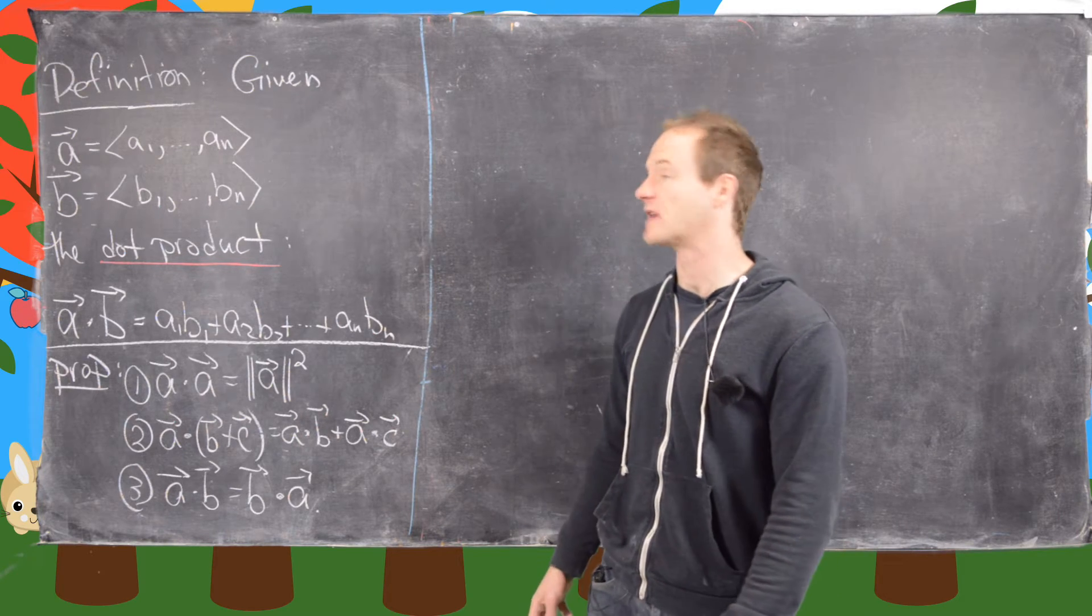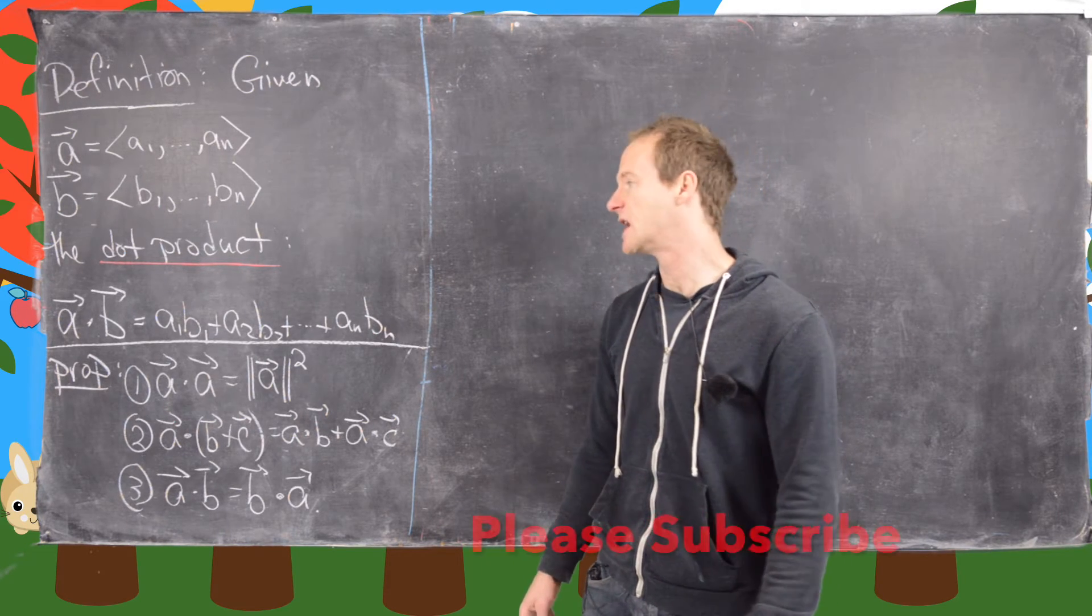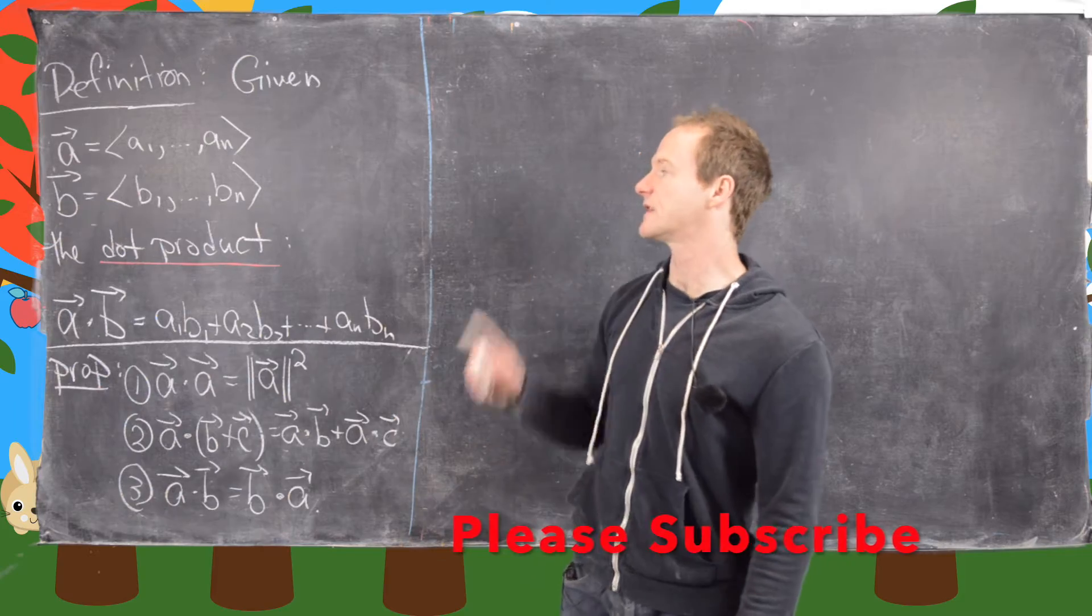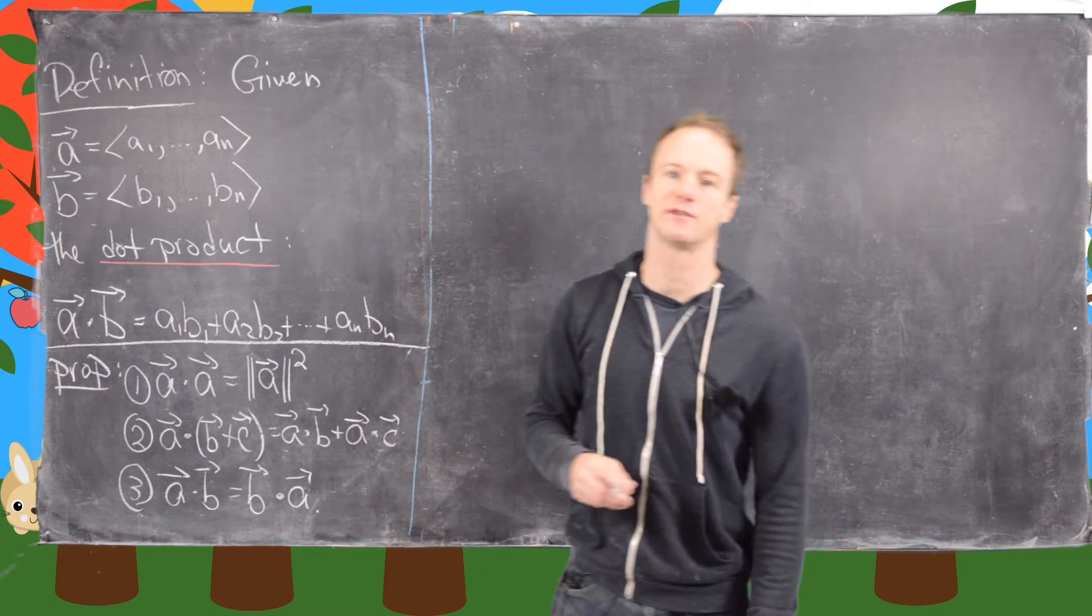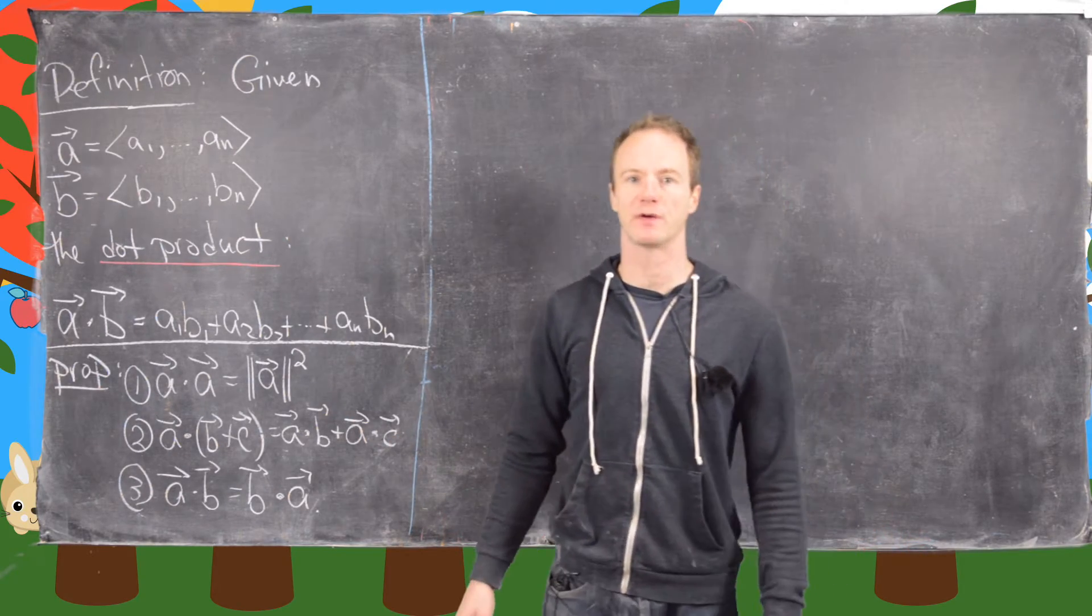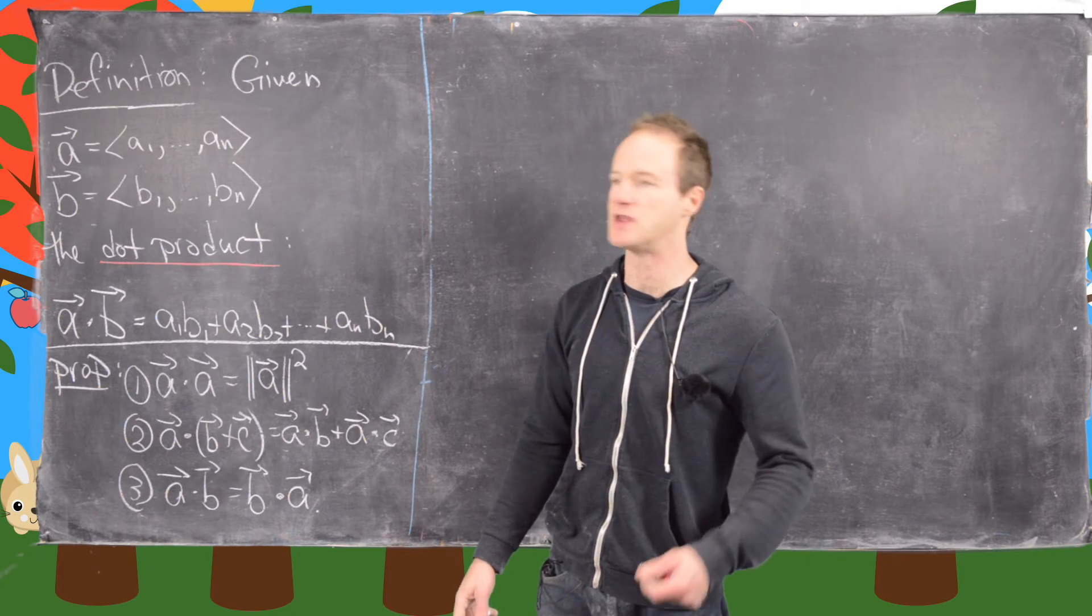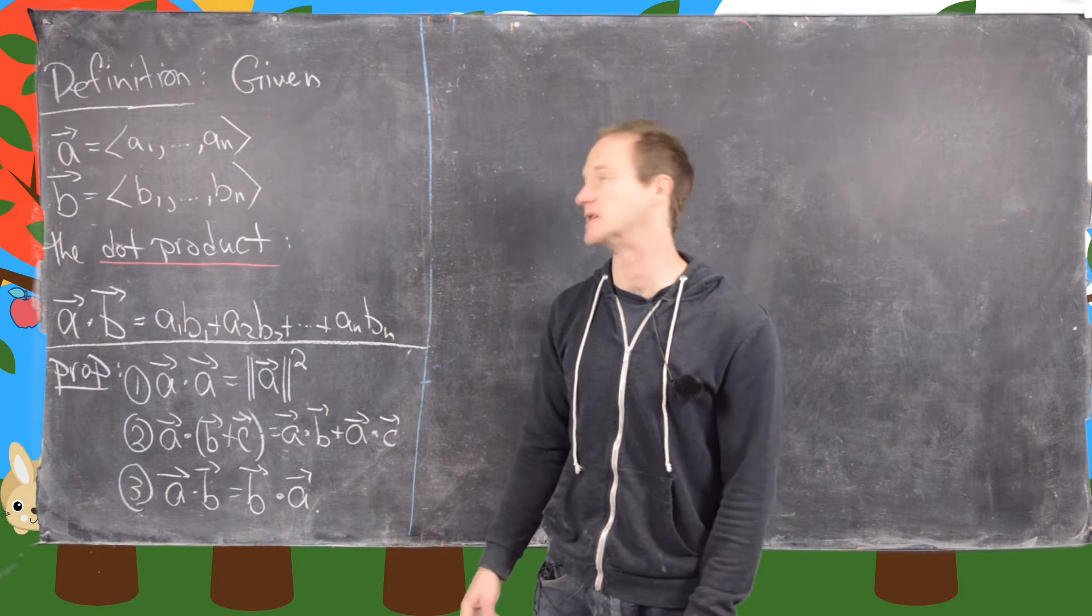Okay, in this video we're going to look at the dot product, its definition, and some of its properties. So let's say we have two n-dimensional vectors. Generally we'll be working with two or three-dimensional vectors, but you can define this generally and it's pretty easy.